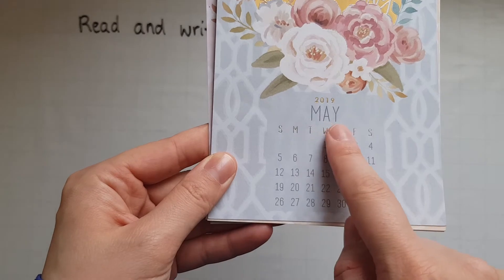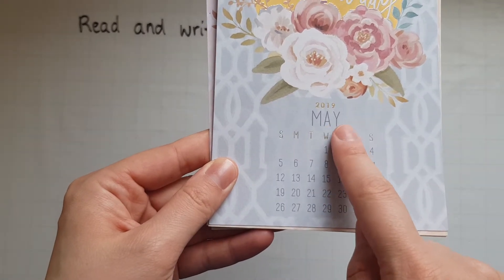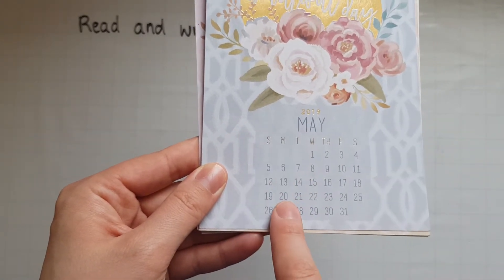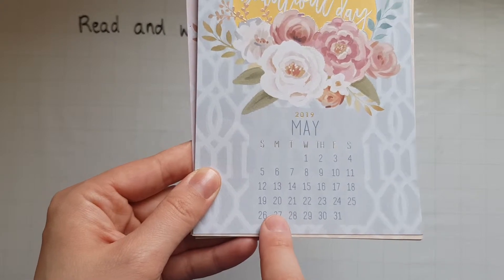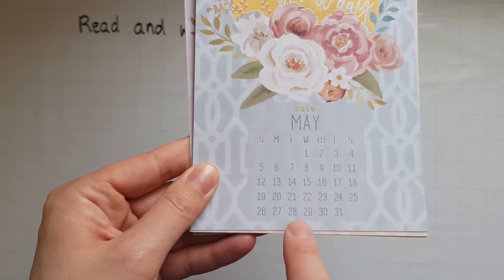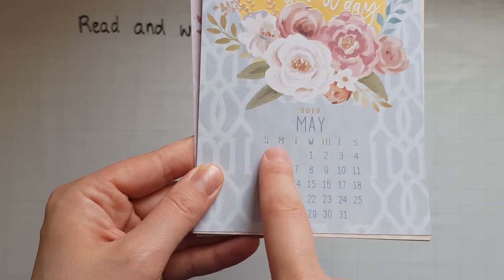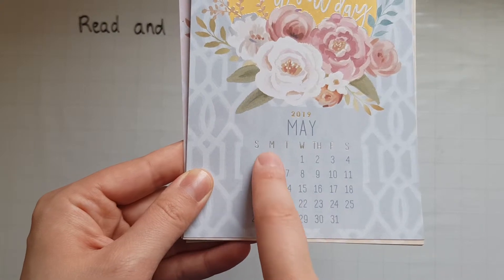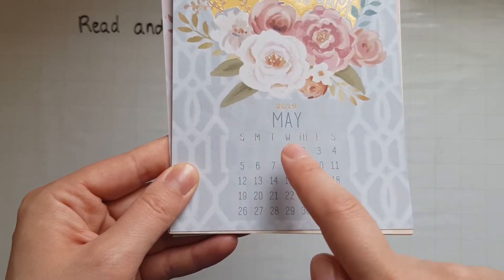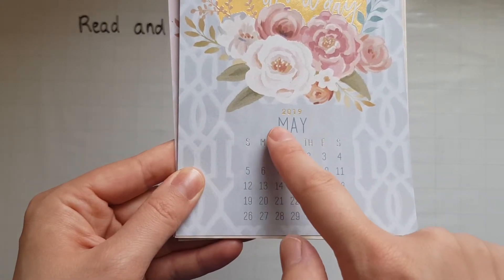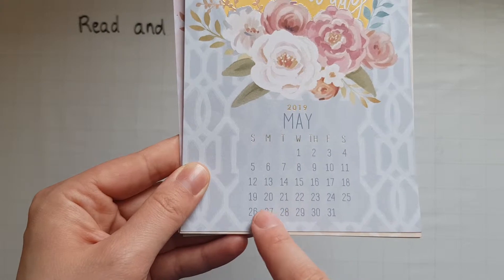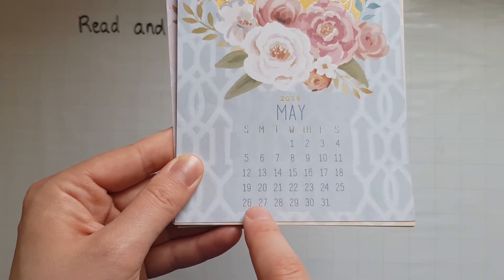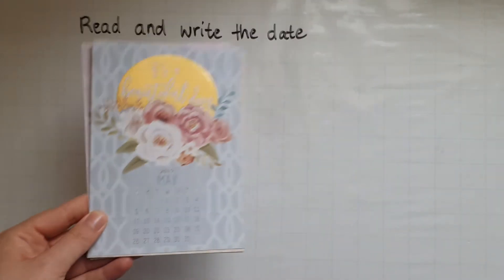There it is. So it is May 27th, Monday. If you don't know what day it is but you know the date, then this tells you it's a Monday. Or if you know it is a Monday but you're not sure of the date, and you know it's towards the end of the month, so that is the 27th.